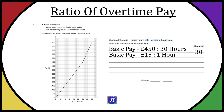Next we want to do the overtime pay. When reading the graph for overtime pay, we want to make sure we don't read from zero to the number — we want to read just the difference. So I'm going to put these labels on here: 10 hours and £250, because that's the difference across. So from 30 to 40 it's 10 hours left to right.